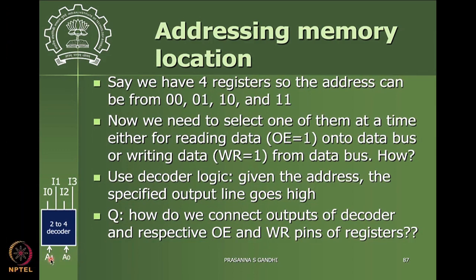The data capacity — data bits in one register — is independent of the number of registers and the number of address bits required. I can have three-bit data or eight-bit data, but the number of registers determines how many address bits are needed. If I have four registers of only two-bit memory, I still need two address lines. The number of address bus lines and data bus width are independent of each other.